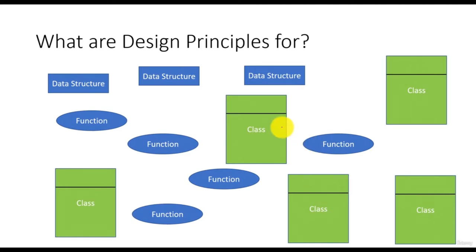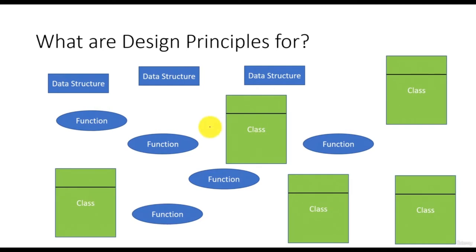Consider this diagram. In this diagram, small rectangular boxes are representing the data structures, ovals are representing the functions and big rectangular boxes are representing the classes. As per this diagram, these data structures, classes and functions are just spread across multiple files haphazardly, and they are interacting with each other on a need basis in a very unstructured manner.